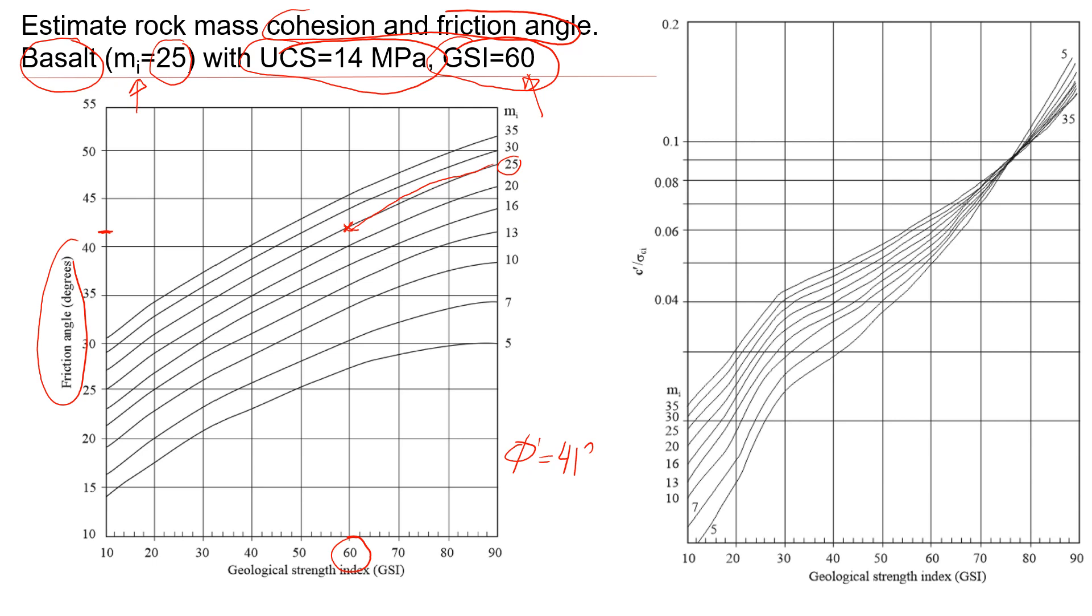So friction angle of rock mass will be around 41 degrees, maybe 42. Doesn't really matter, 41, 42. This is what you do with friction angle.